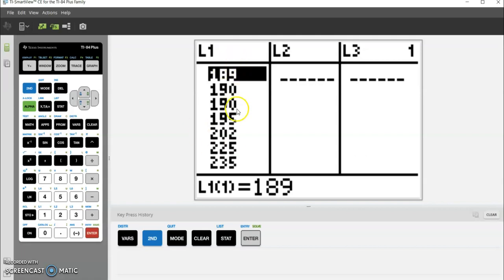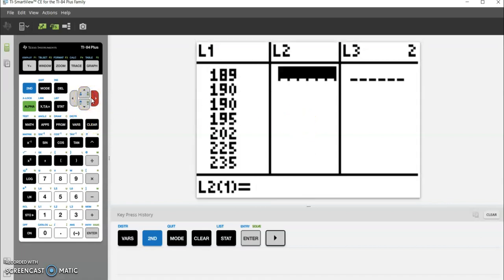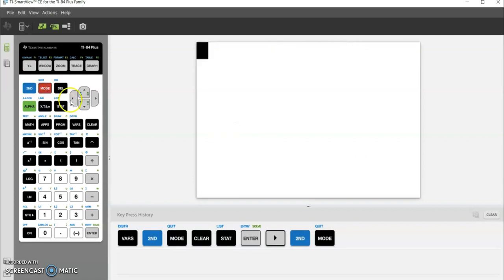I'm going to reuse that data, but you would enter it where you want. You can add more if you had a second set to add to list 2. I'm going to quit out of here using 2nd MODE to quit.